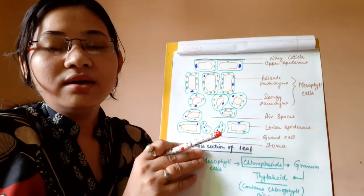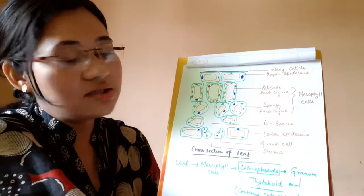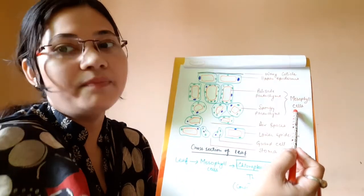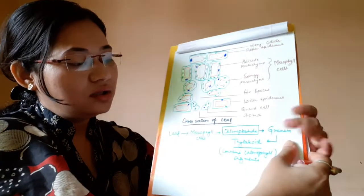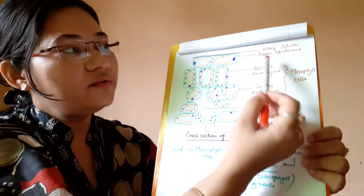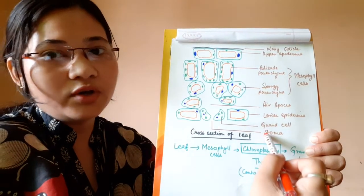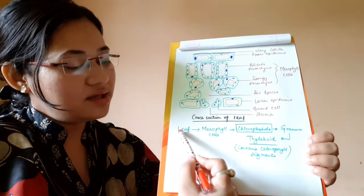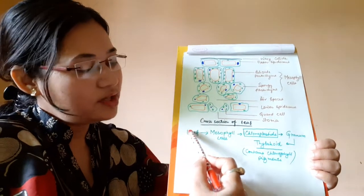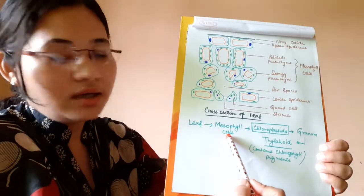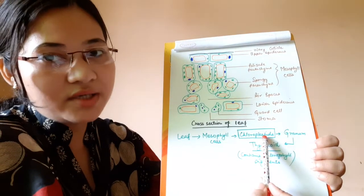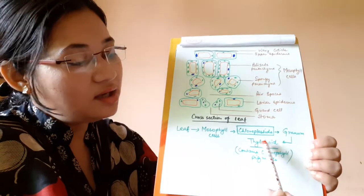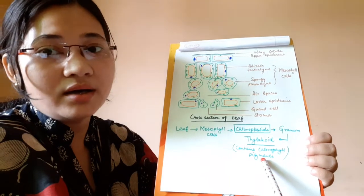So here we can see the cross-section of a leaf. In this cross-section, we can say that chloroplastids are present in the mesophyll cells. In a cross-section of a leaf, there are different layers of cells, and this diagram is very important for you to practice. The site for photosynthesis is basically in a leaf. Leaves are called the kitchen of the cell. In the leaves, mesophyll cells are present; in the mesophyll cells, chloroplastids are present; in the chloroplastid, granum is present; in the granum, thylakoids are present; and in the thylakoids, chlorophyll pigments are present.